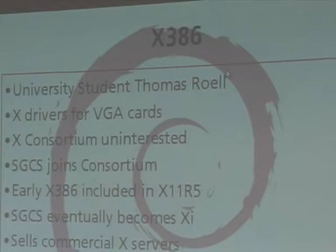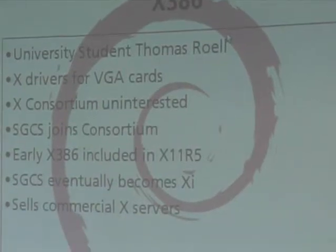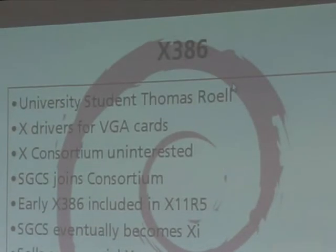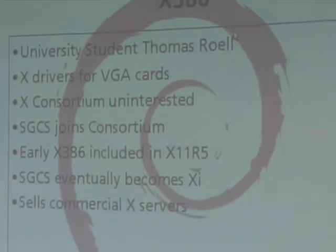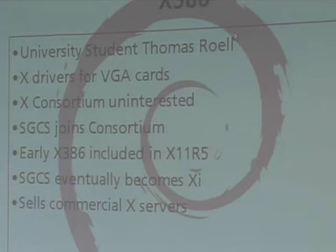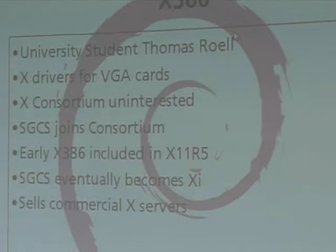But Thomas was actually very interested in working on this stuff. It was really interesting that you could take a $2,000 machine and get a full-fledged Unix with a windowing system running on it. So Thomas joined up with Mark Sniddley and they put together a consulting company, SGCS. In order to get their VGA drivers into the windowing system, they joined the consortium — the only way to get a voice in the X Window System was to pay money. It's a totally pay-for-say environment. And it actually did work — X386 code was included in X11R5.